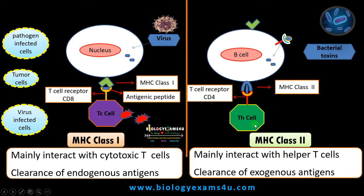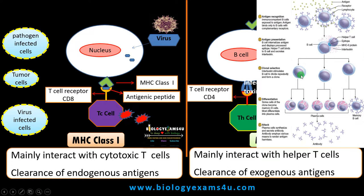T helper cells interact only with antigen presenting cells, recognizing the antigenic peptide presented on MHC class 2 via the T cell receptor. T helper cells carry the CD4 receptor. Upon binding of the MHC class 2 bound antigenic peptide, T helper cells secrete interleukins and chemokines that cause the proliferation of that particular B cell — a process called clonal selection.